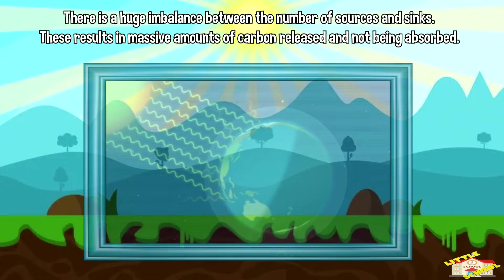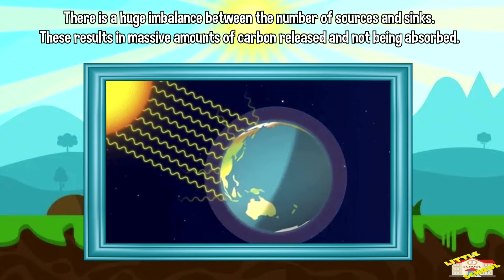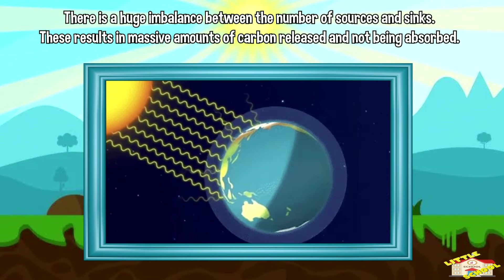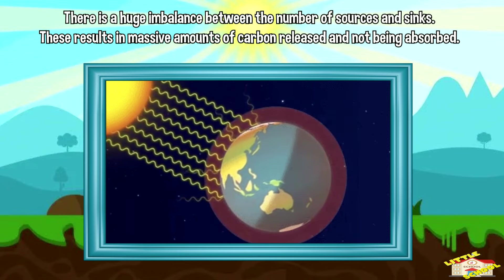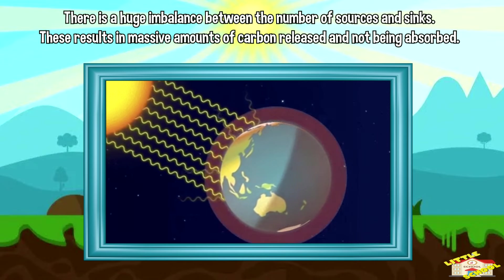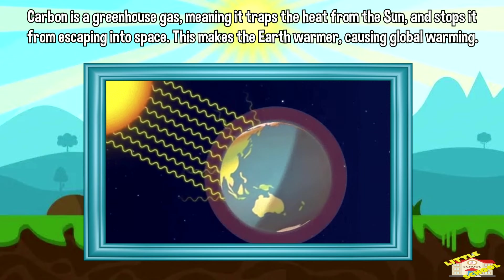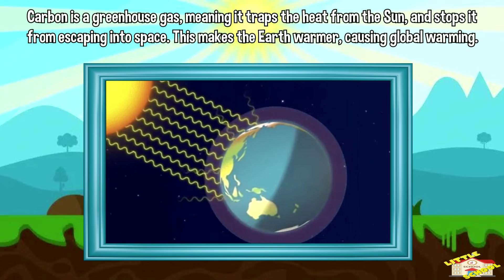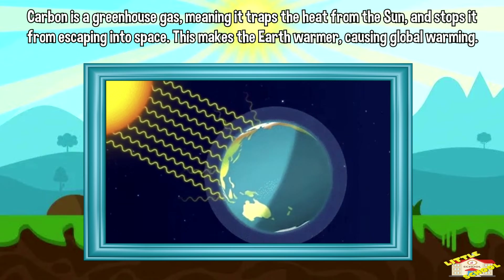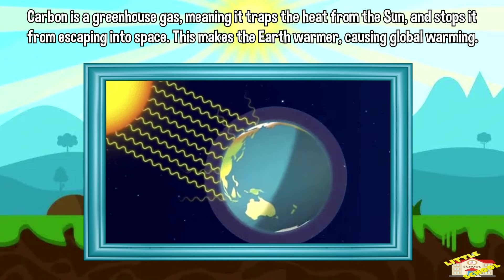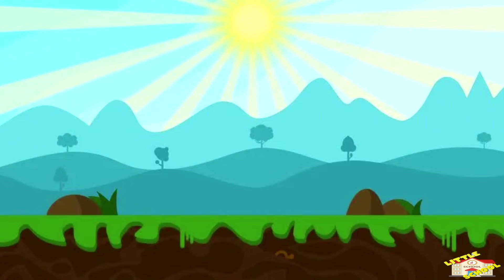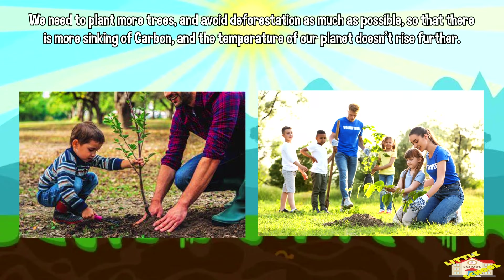There is a huge imbalance between the number of sources and sinks, resulting in massive amounts of carbon being released and not absorbed. Carbon is a greenhouse gas, meaning it traps heat from the Sun and stops it from escaping into space, making the Earth warmer and causing global warming. We need to plant more trees and avoid deforestation as much as possible so that there is more sinking of carbon and the temperature of our planet doesn't rise further.